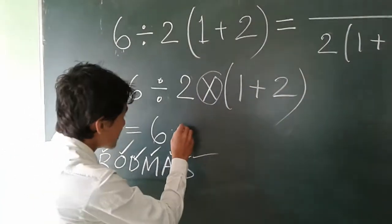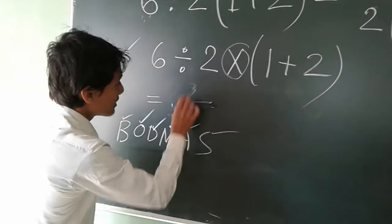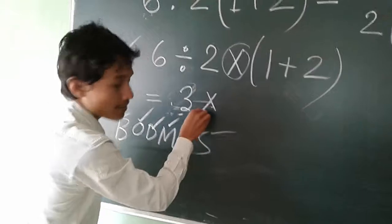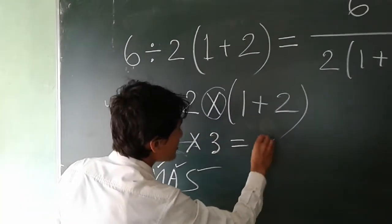we evidently get the result 6 divided by 2, that means 3 into 1 plus 2 gives 3. Evidently, the result is 9.